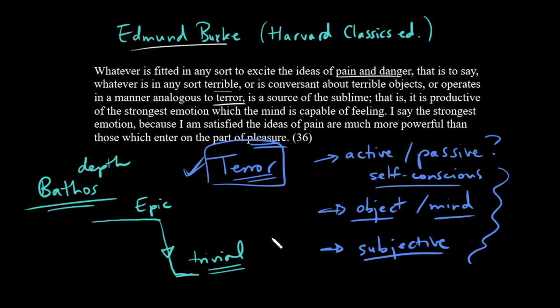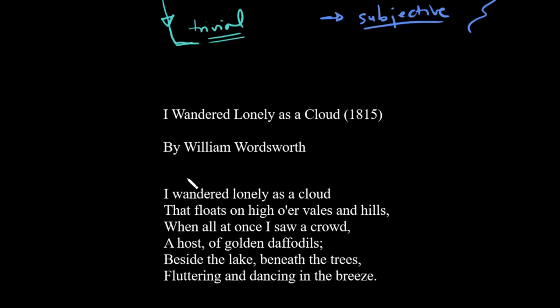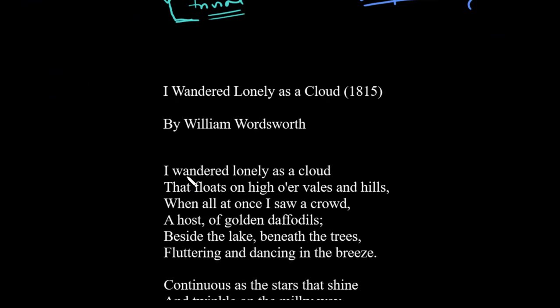One question then is: is this poem about daffodils an example of the sublime, an example of beauty, or does it end up as bathos? Some earlier readers did feel that 'I Wandered Lonely as a Cloud' is an example of bathos — that's exactly what Coleridge said about it. They argued this is supposed to be about daffodils, but they can't be sublime; they're just a bunch of flowers, and surely Wordsworth is making too much of them.